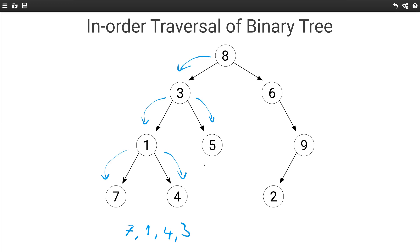Here there is no left subtree, so we are done visiting the left subtree of 8, so now we can visit 8. Then we go visit the right subtree in order. We want to visit the left subtree, but since there is no left subtree, we are done immediately — so we visit the current node 6.